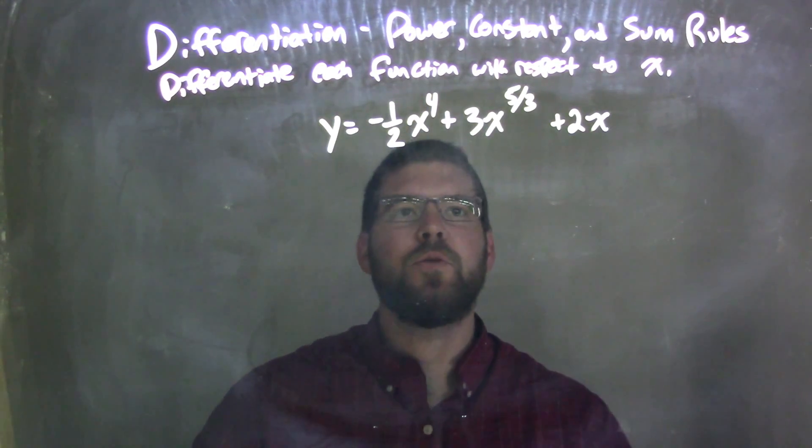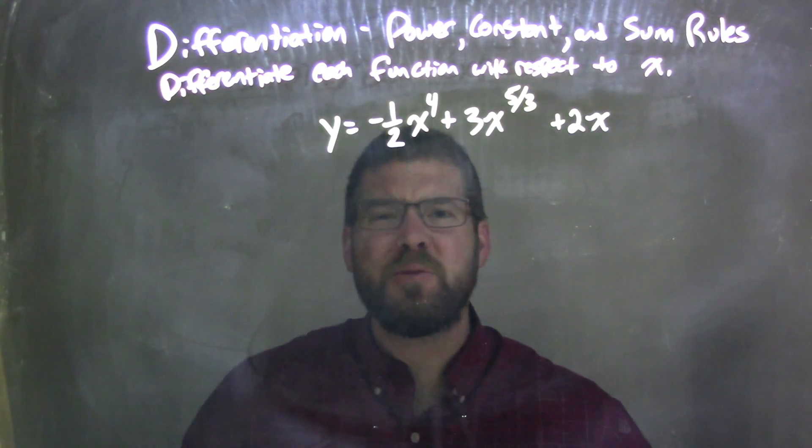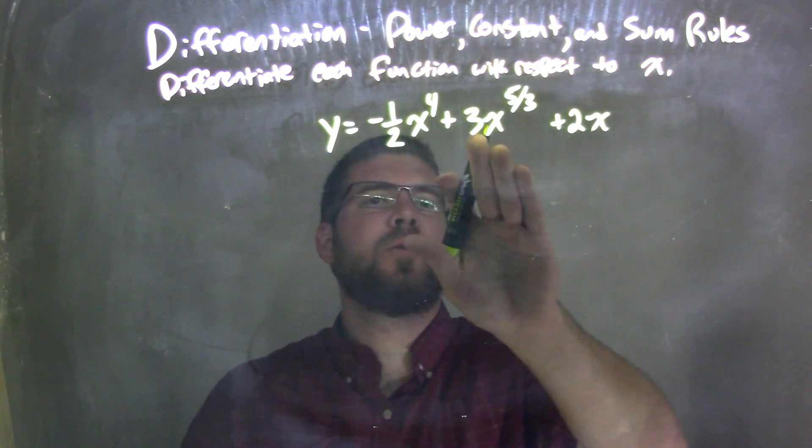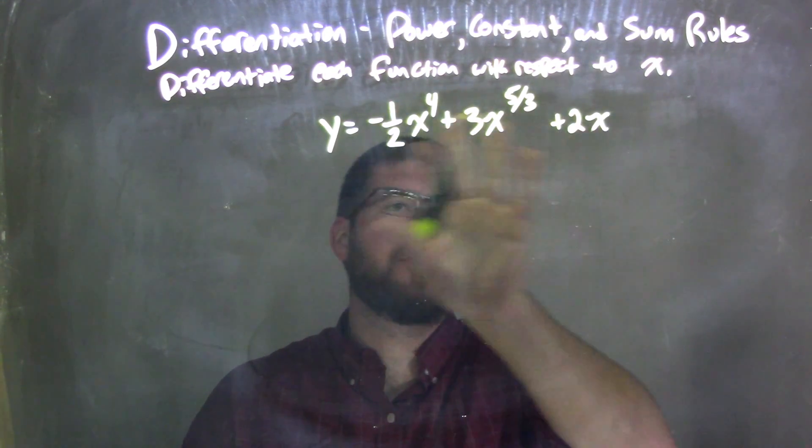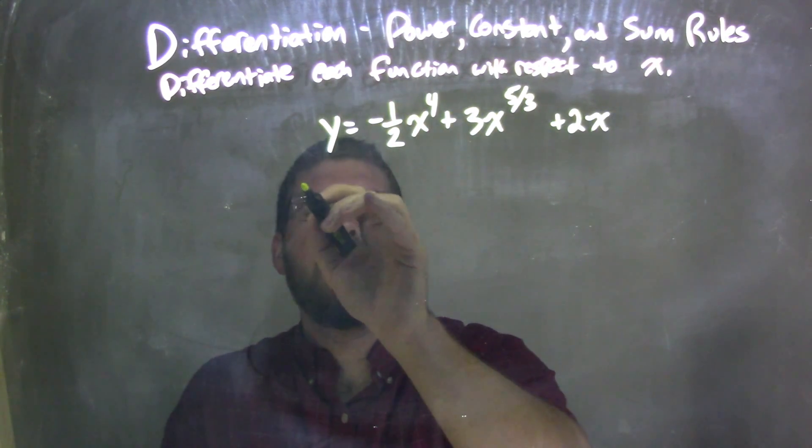If I was to derive it, take the power rule of each part individually, and the sum rule is kind of combining them all.